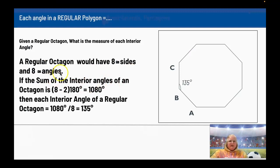Given a regular octagon, what is the measure of each interior angle? A regular octagon would have 8 sides, an 8-sided polygon also has 8 angles. If the sum of the interior angles of a regular octagon is 8 minus 2 times 180 degrees, so that's 8 minus 2 is 6, 6 times 180 is 1080.